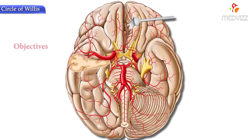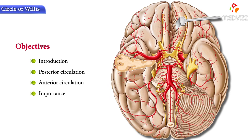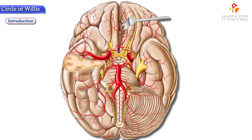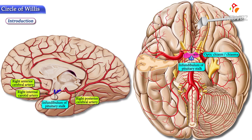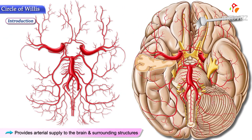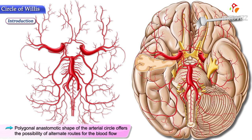The Circle of Willis: the objectives to be looked at today are introduction, posterior circulation, anterior circulation, importance, and the clinical anatomy. The Circle of Willis is an arterial ring located at the base of the brain, around the optic chiasm, infundibulum of the pituitary stalk, and the hypothalamus. This arterial circle provides arterial supply to the brain and surrounding structures, and is also referred to as the polygon of Willis.